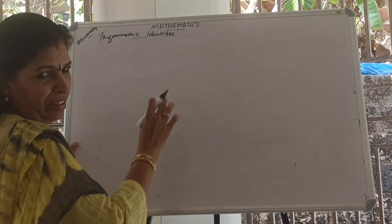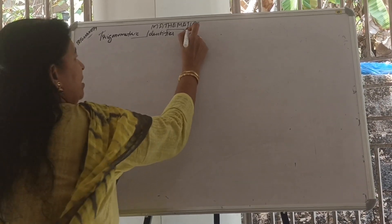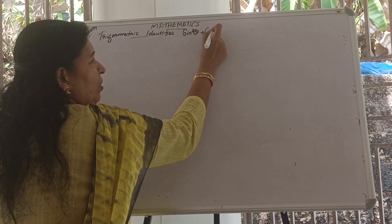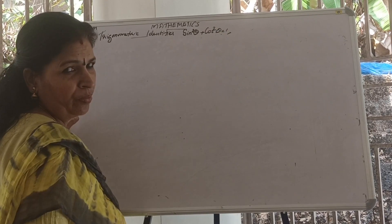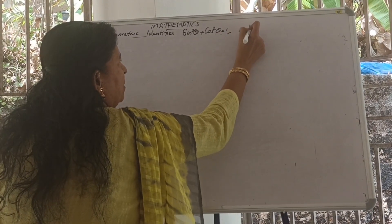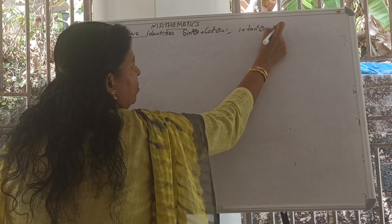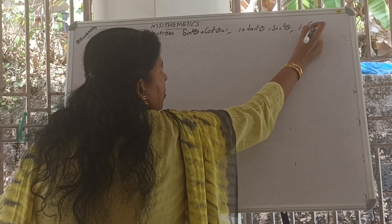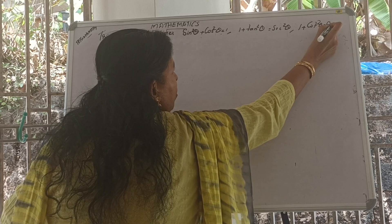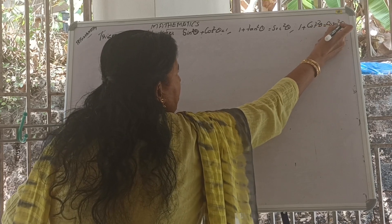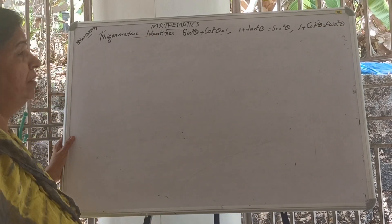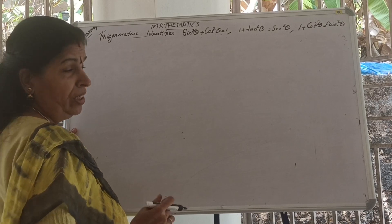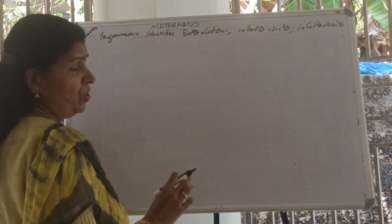There are mainly three identities students have to know. The three identities are: sine squared theta plus cos squared theta equals one; one plus tan squared theta equals cosec squared theta; and one plus cot squared theta equals cosec squared theta.